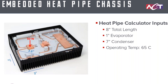With that, we have all the inputs: an eight inch total length, a one inch evaporator, and since the fins are distributed across the entire heat pipe length, every area that's not the evaporator is the condenser — so a seven inch condenser. For a single operating point, we're considering 65 degrees C, and the desired heat transport is 50 watts divided by two, which is 25 watts, because we're distributing between two heat pipes.